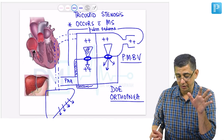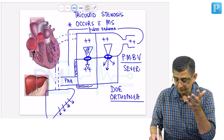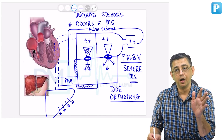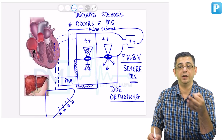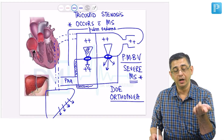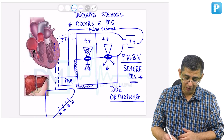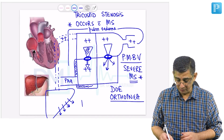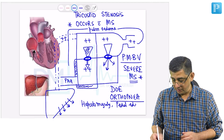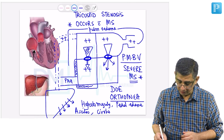In clinical practice, MS is treated aggressively by percutaneous mitral balloon valvotomy since it is of the severe variety. We would expect resolution of symptoms, and yes, pulmonary congestion will resolve, but now features of right-sided heart failure will develop. Features of right ventricular failure develop primarily because of congestion in the superior vena cava and inferior vena cava transmitted to the liver, so these patients will develop hepatomegaly, pedal edema, and ascites.